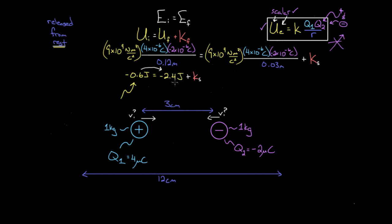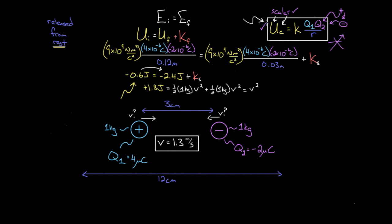Solving: we add 2.4 joules to both sides and get positive 1.8 joules on the left. With two kinetic energy terms — one-half times one kilogram times v-squared for each charge — they again combine to v-squared, and solving gives v = 1.3 meters per second, the same value as before. To recap: the formula for electric potential energy between two charges is K Q1 Q2 over R. Since energy is a scalar, you plug in negative signs to determine if potential energy is positive or negative. Systems can have negative electric potential energy, and those systems can still convert energy to kinetic energy — they just need their electric potential energy to become even more negative.